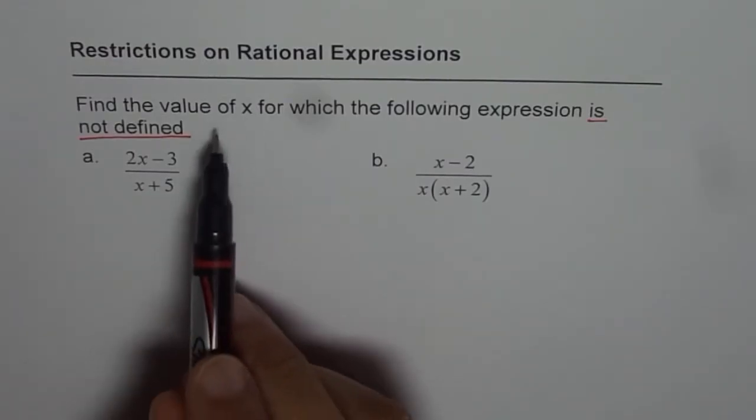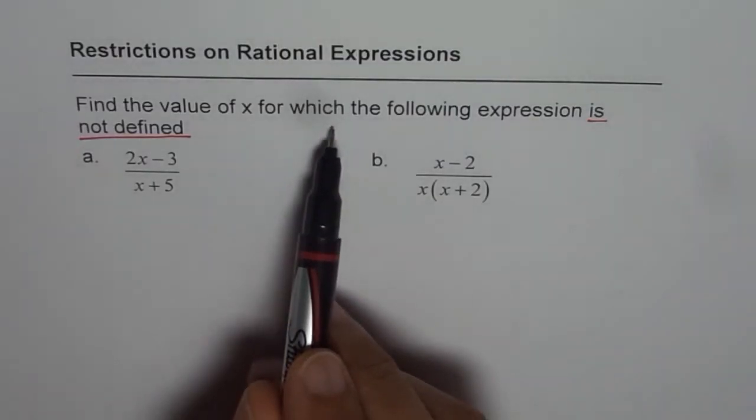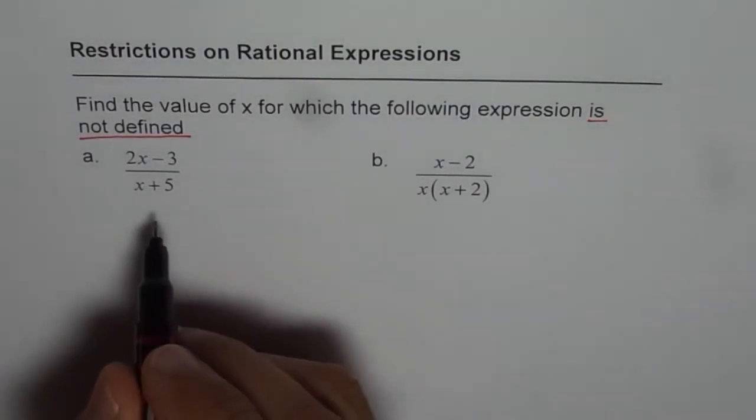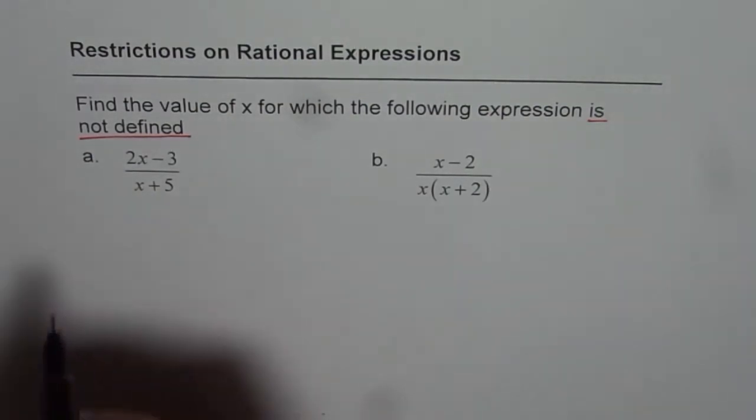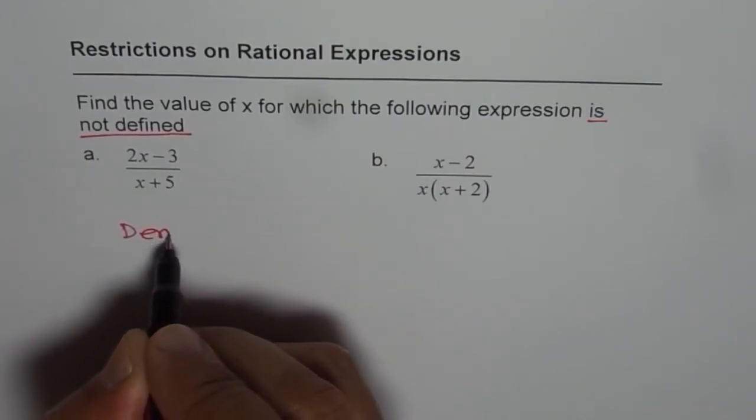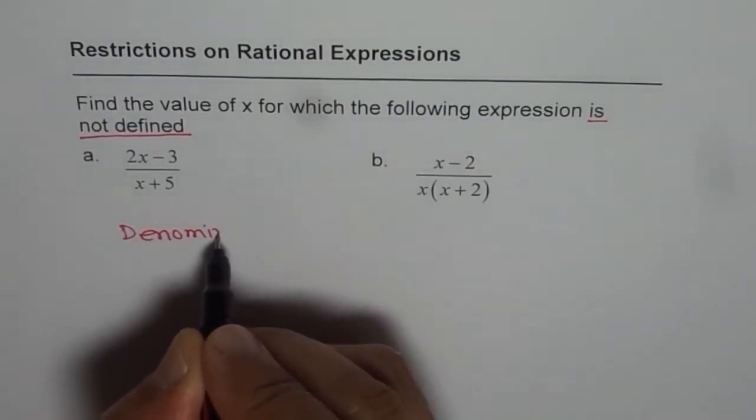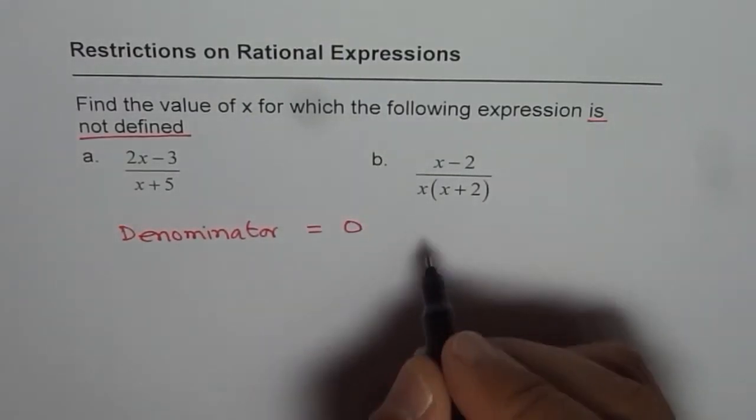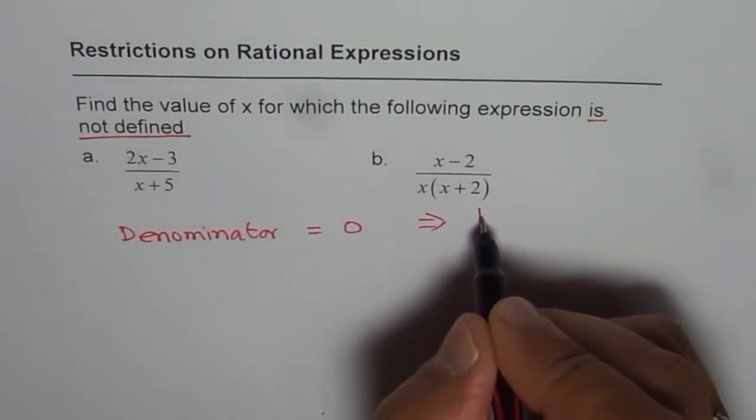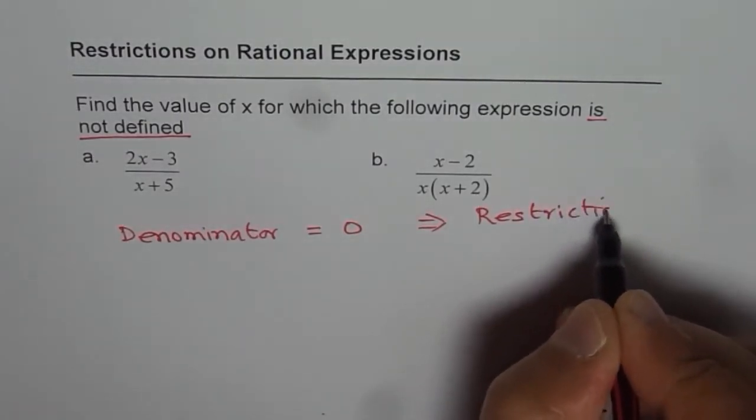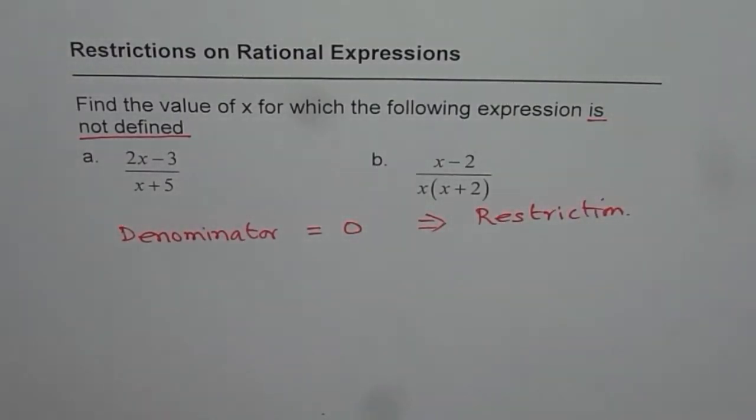To find the value of x for which a rational expression is not defined, we equate the denominator to 0. So what we will do in this example is equate the denominator to 0, and this will give us all the restrictions. That is the key for solving such questions.